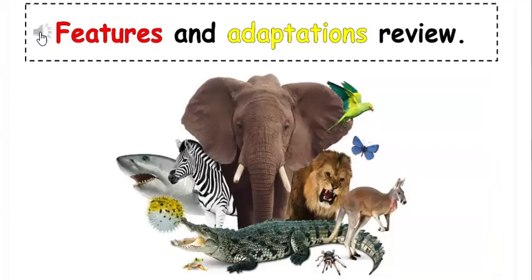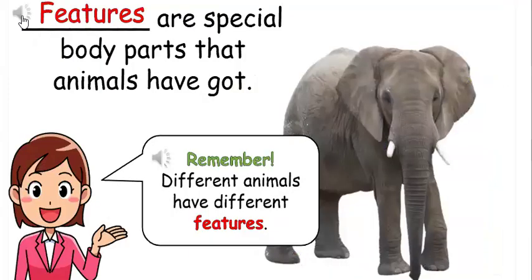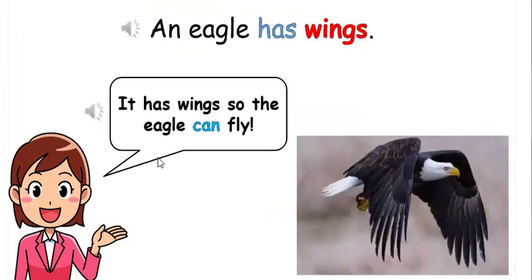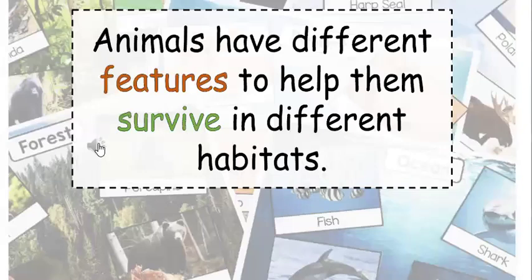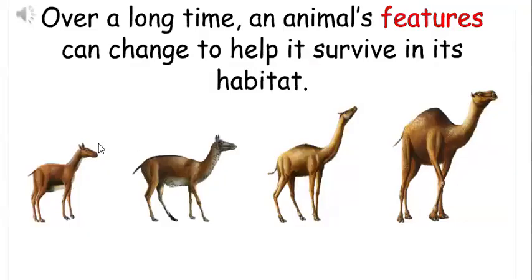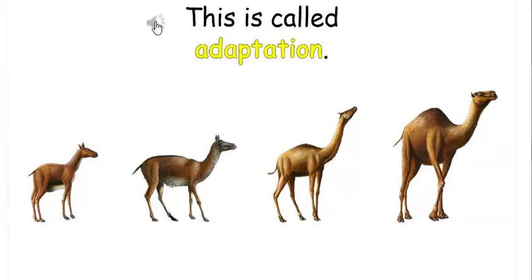Features and Adaptations Review. Features are special body parts that animals have. Remember, different animals have different features. An eagle has wings — it has wings so the eagle can fly. Animals have different features to help them survive in different habitats. Over a long time, an animal's features can change to help it survive in its habitat. This is called adaptation.